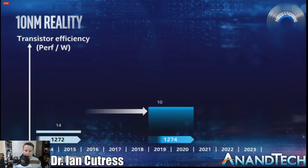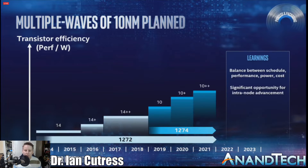What happened is 10nm, because of various failings in its design, has been pushed out to 2019. We're expecting 10nm parts by the end of 2019 to come into wider circulation than Canon Lake was. In order to fill up the gap, Intel has developed these new processes of 14 plus and 14 plus plus, which are refinements on the 14nm design.